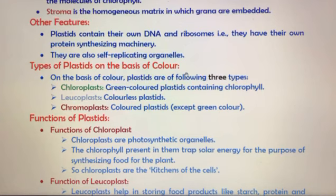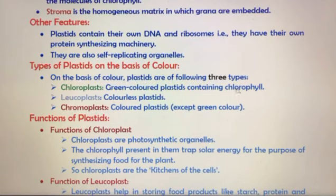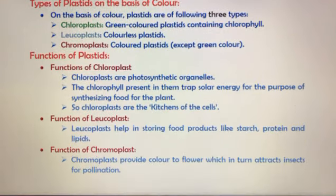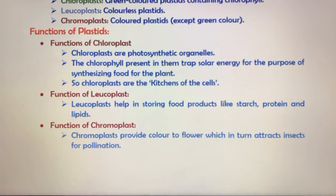The three types of plastids are: chloroplasts, leucoplasts, and chromoplasts. Each type has different functions which we will study in detail.